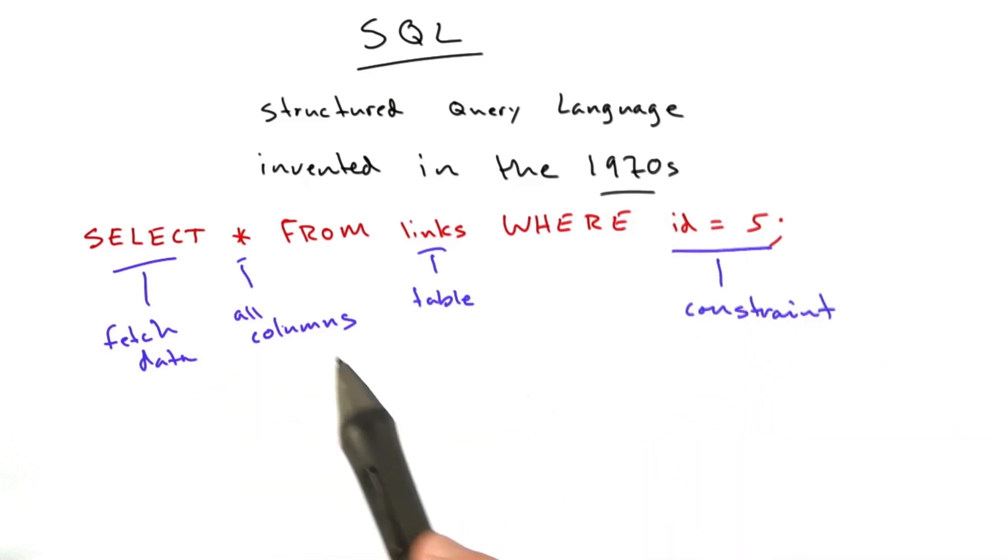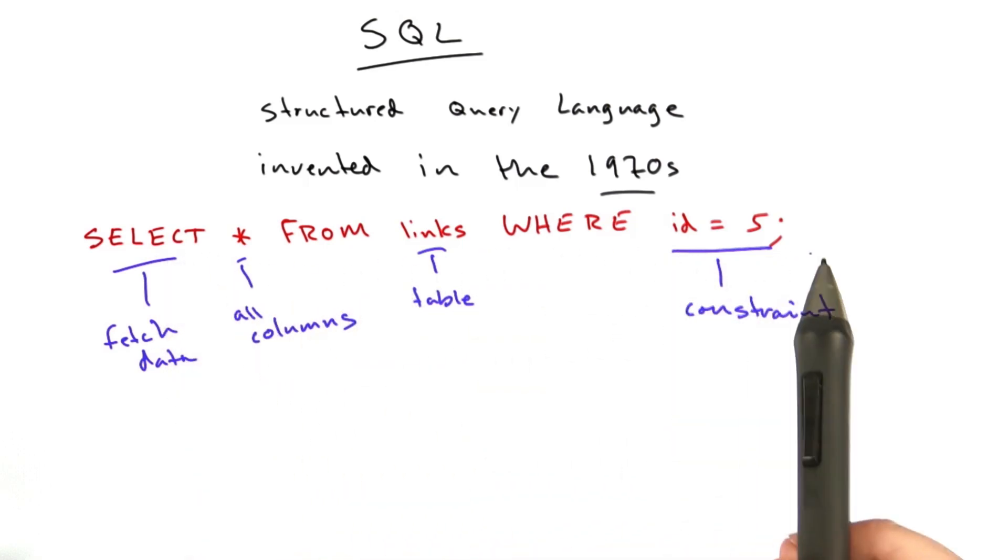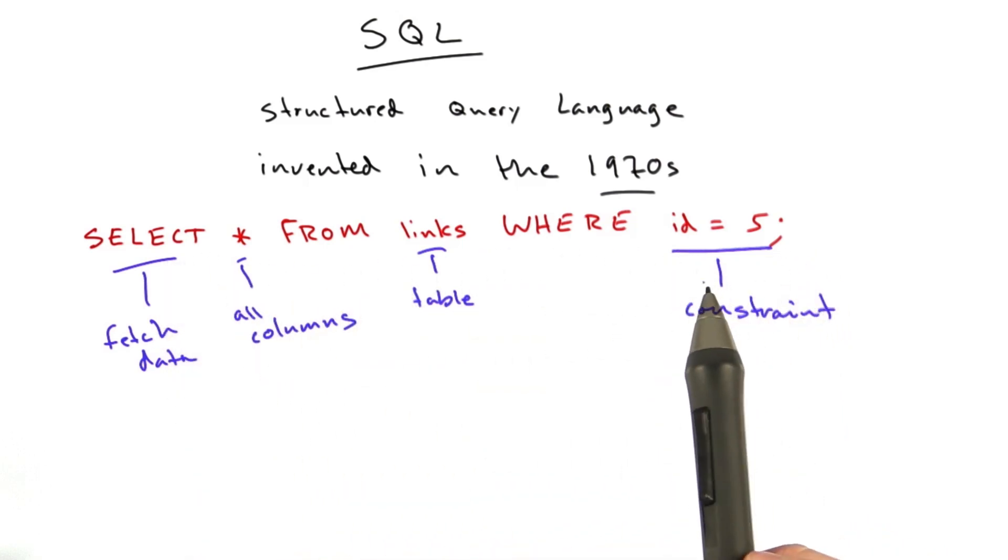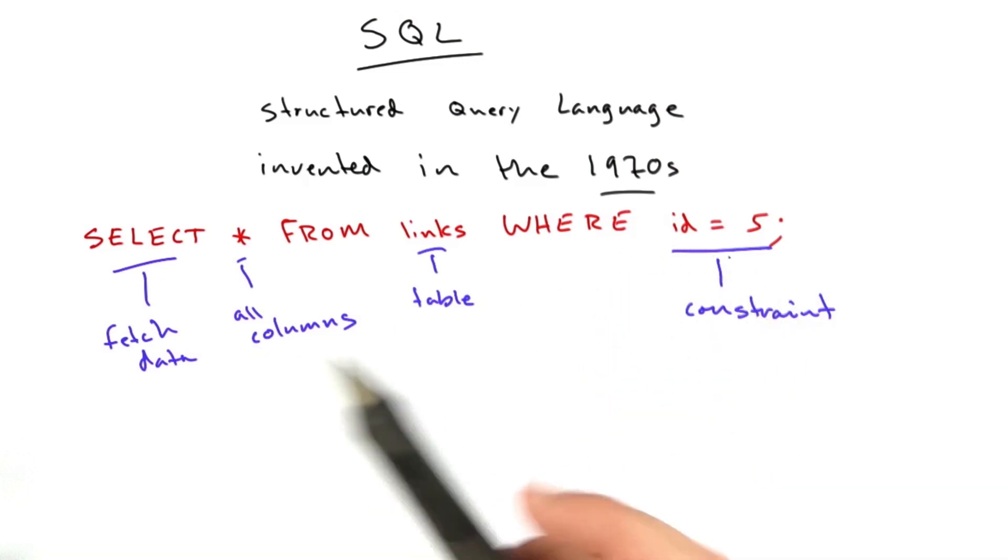So SQL, as you can see, it's a fairly readable language. Select all from links where id equals 5. That's almost similar to the quiz I gave you earlier in this lesson.